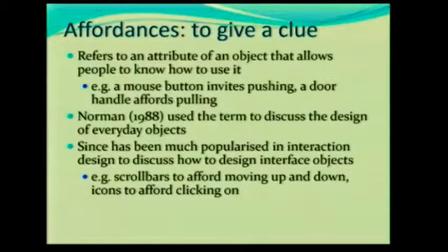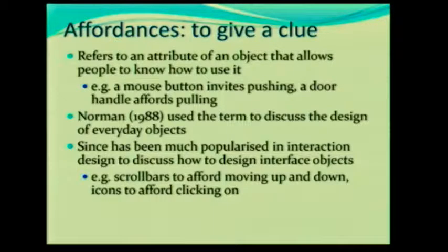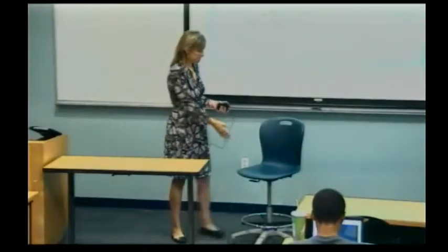If you want to see some really interesting examples, there's a really good book by Norman that he wrote in 1988 called The Design of Everyday Objects. You will see things he talks about in that book that we don't notice every day. So things such as chairs — you see a chair, what do you do? You sit down. It's the right height, it's nice and curved, it has a back to it. A chair has great affordance.